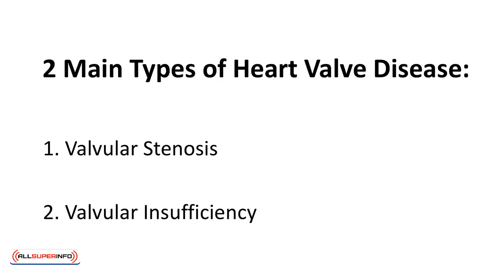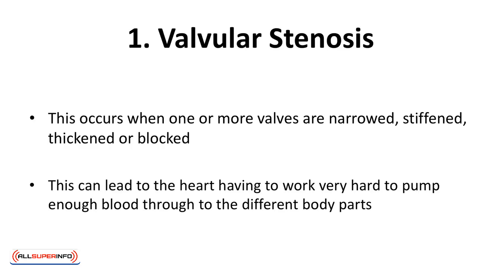There are two main types of heart valve disease. One, valvular stenosis, and two, valvular insufficiency. Valvular stenosis occurs when one or more valves are narrowed, stiffened, thickened, or blocked. This can lead to the heart having to work very hard to pump enough blood through to the different body parts. All four of the heart valves can develop stenosis.